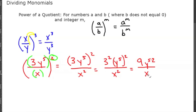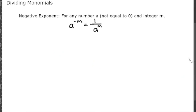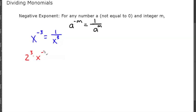The rule with negative exponents is that for any number a where a is not equal to zero and any integer m, a to the negative m is going to be equal to 1 over a to the positive m. So if I give you x to the negative 3, that would really be 1 over x cubed. Now let's look at this example: 2 to the third times x to the negative 2 times y to the negative 4, all over z to the negative 2.